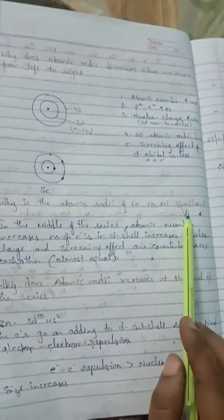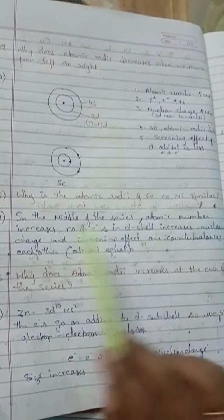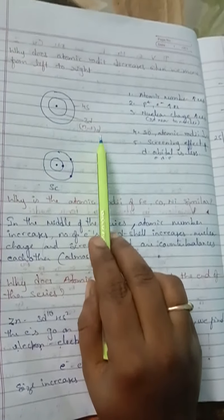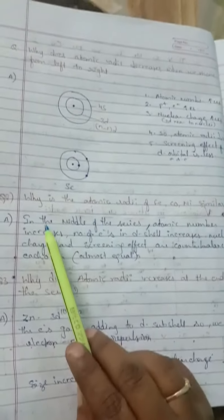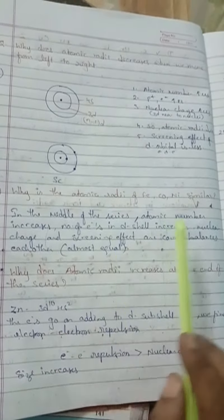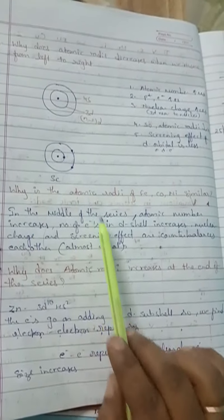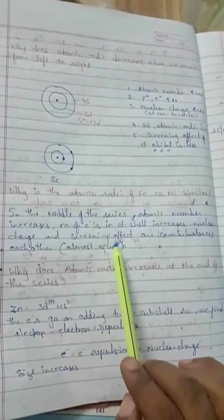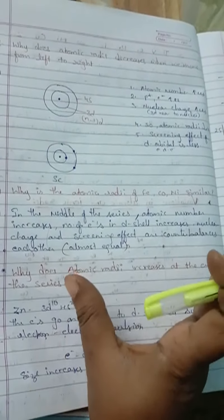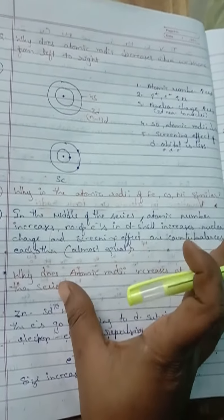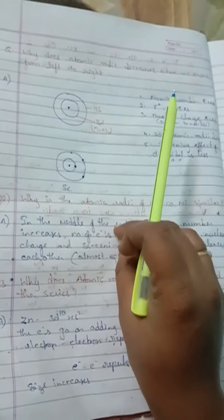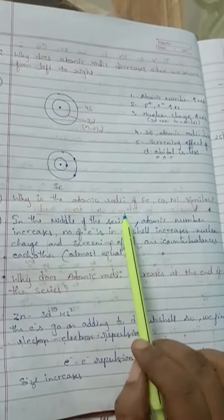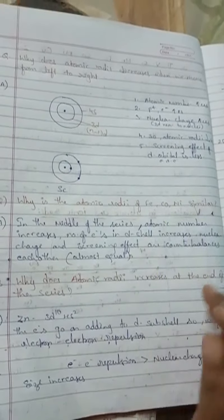Next question: why is the atomic radii of iron, cobalt, and nickel similar? In the middle of the series, nuclear charge is more — atomic number increases and the number of electrons in the d shell also increases. Nuclear charge and the screening effect counterbalance each other and are almost equal. When they are almost equal, the atomic radii of these three elements will be similar.